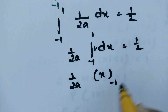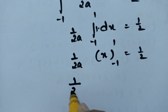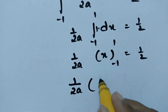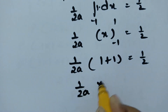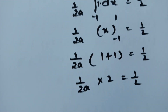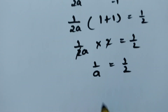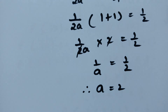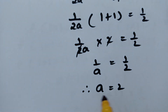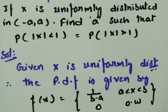Since 1/(2a) is a constant, this becomes (1/2a) × [x] from -1 to +1 = 1/2. Evaluating: (1/2a) × (1 - (-1)) = (1/2a) × 2 = 1/2. Cancelling gives 1/a = 1/2, therefore a = 2.